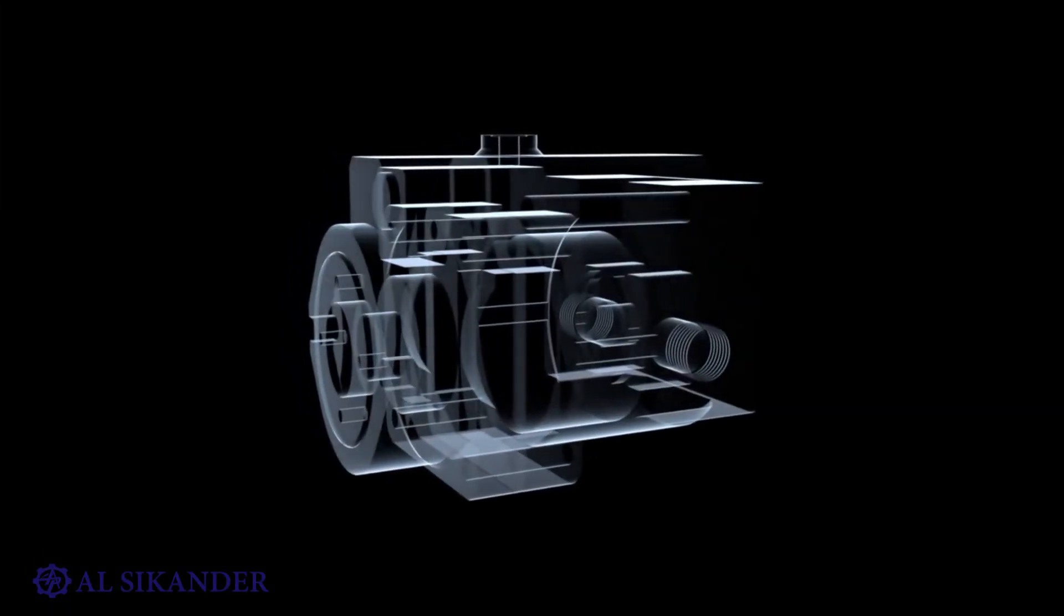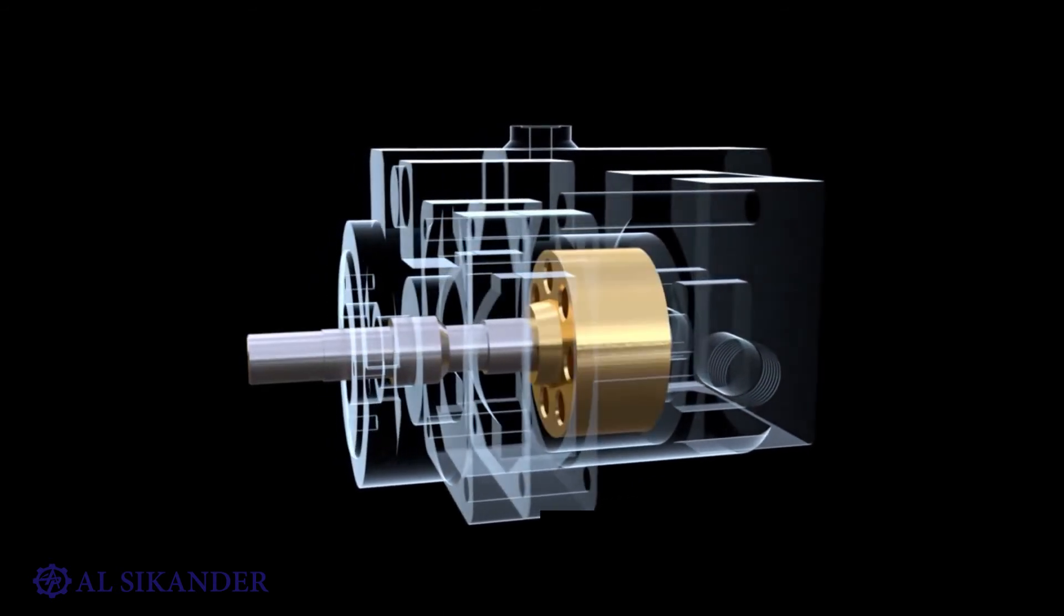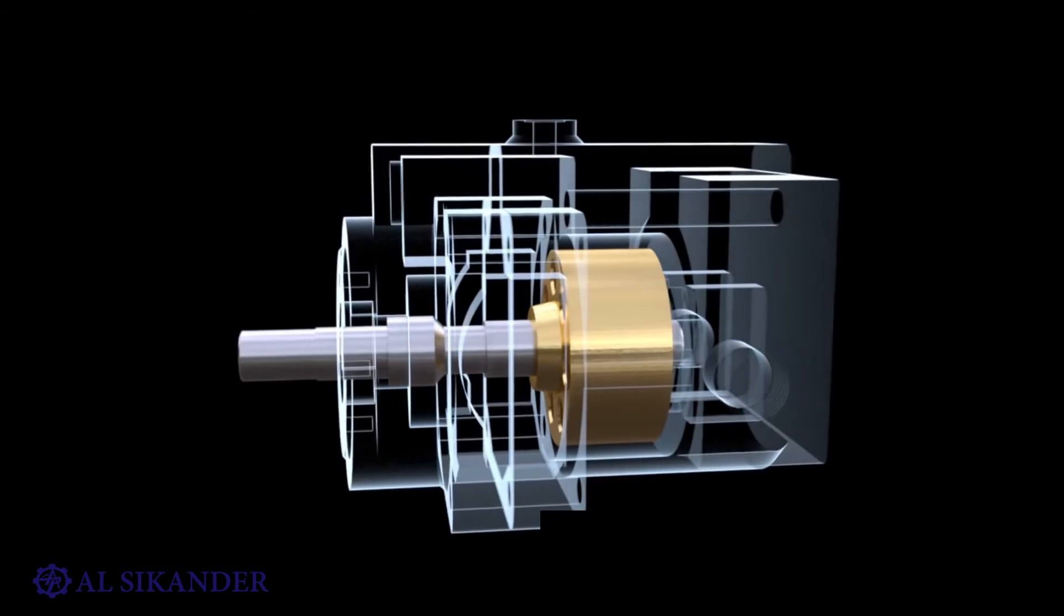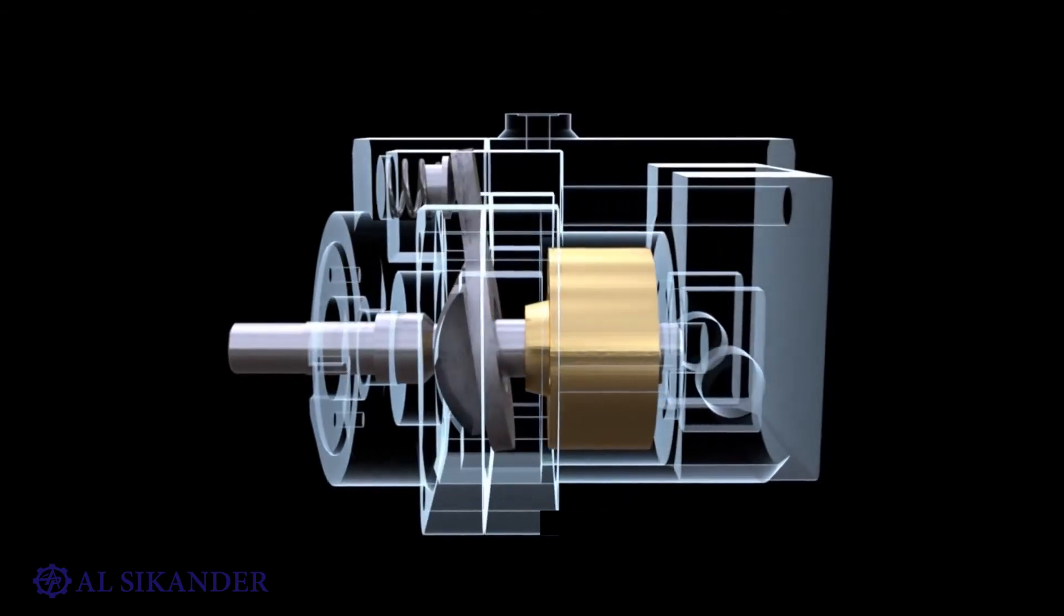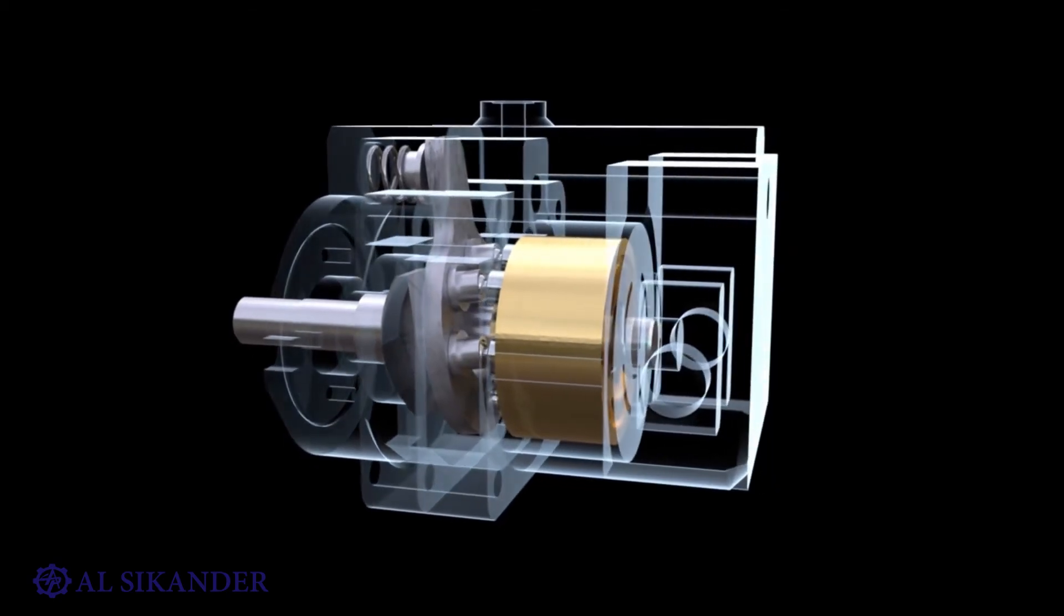Inclined disc pumps can also be adjustable. The cylinder block in inclined disc pumps is mounted coaxially to the driven shaft. Rotation to the block is usually transmitted by means of a key or a spline connection.